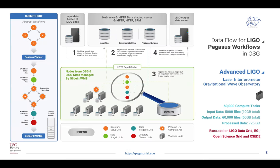LIGO is on the other end of the spectrum — their workflows are mainly high-throughput computing workflows set up to run in a completely distributed fashion on Open Science Grid and their own captive LIGO clusters. They use a combination of pilot jobs managed by GlideinWMS on OSG. The LIGO workflows have complicated data movements due to the distributed execution environment, and they use Pegasus to seamlessly do data transfers for their workflows, leveraging all available caches.